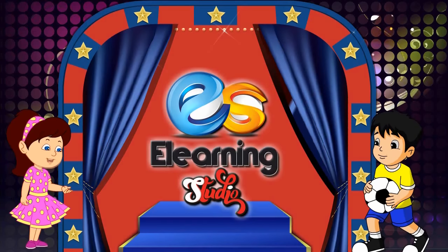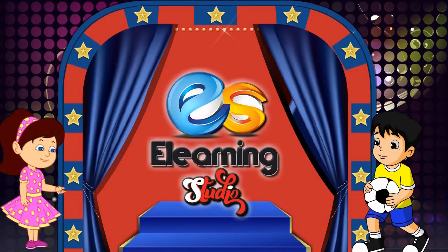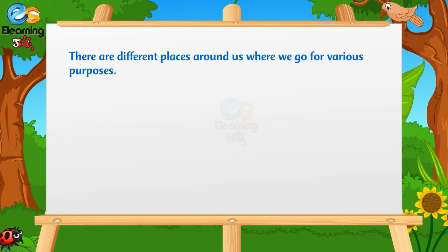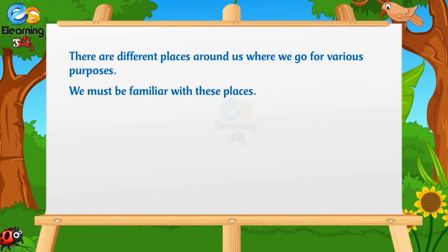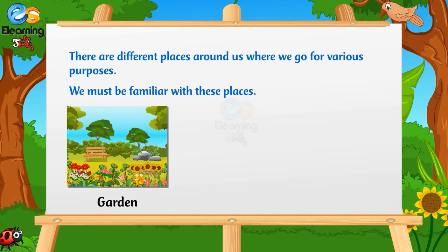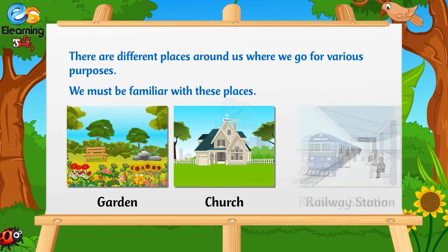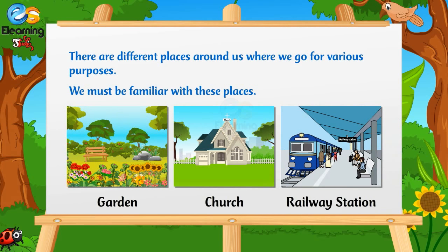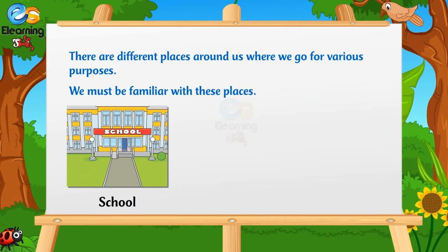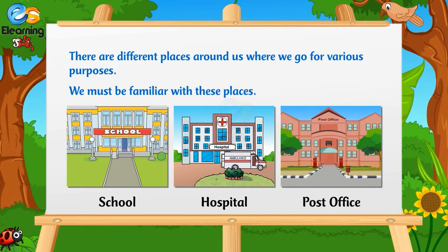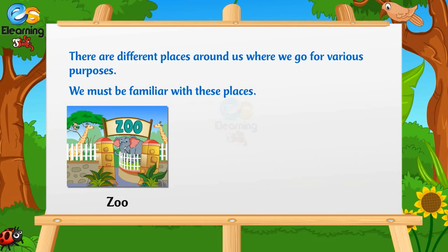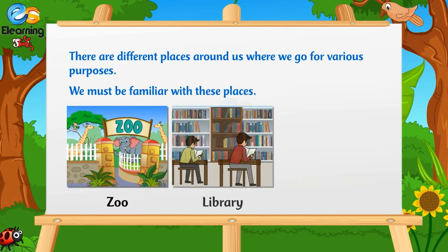E-Learning Studio. There are different places around us where we go for various purposes. We must be familiar with these places. Garden, Church, Railway Station, School, Hospital, Post Office, Zoo, Library.